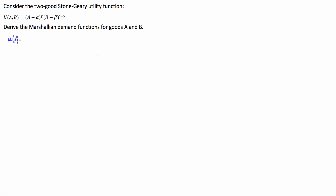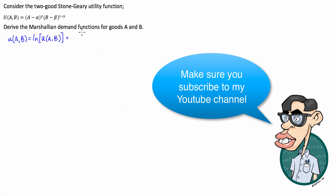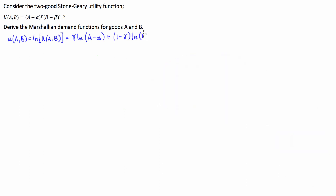I'm going to represent this with a lowercase u rather than capital U. So u of A and B is going to be equal to the natural log of the regular function, which when we rewrite using natural logs is going to be equal to gamma times the natural log of (A minus alpha) plus (1 minus gamma) times the natural log of (B minus beta). Our utility maximization problem is to maximize lowercase u of A and B subject to an income constraint where the consumer's income is totally spent on the purchase of these two goods.